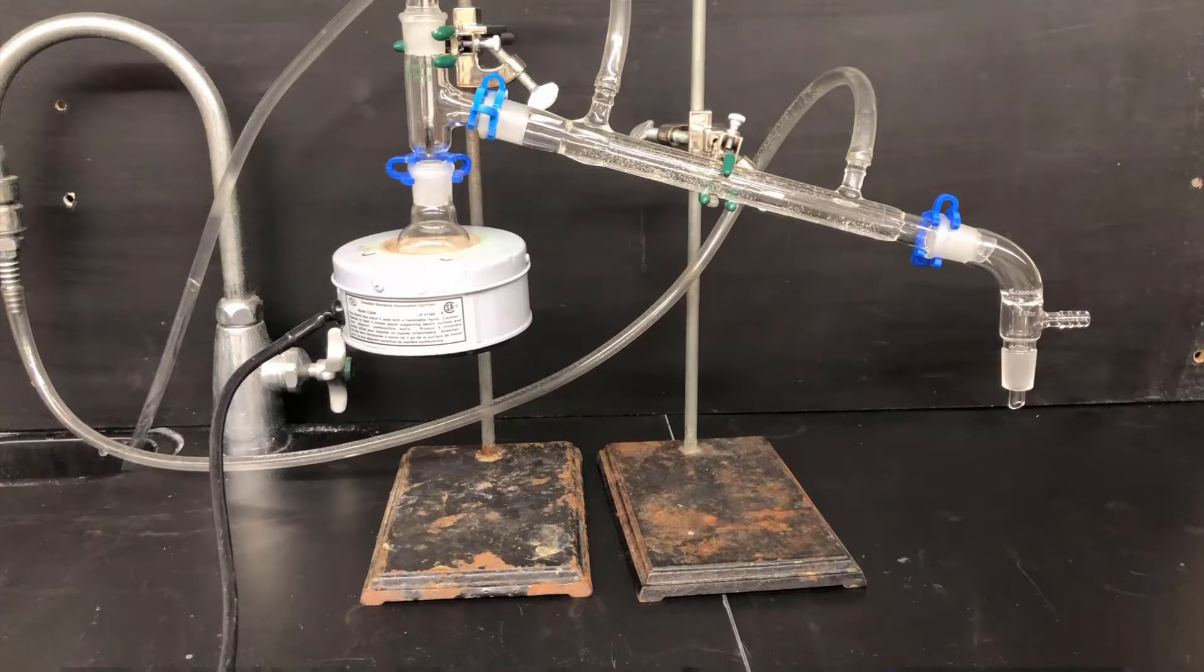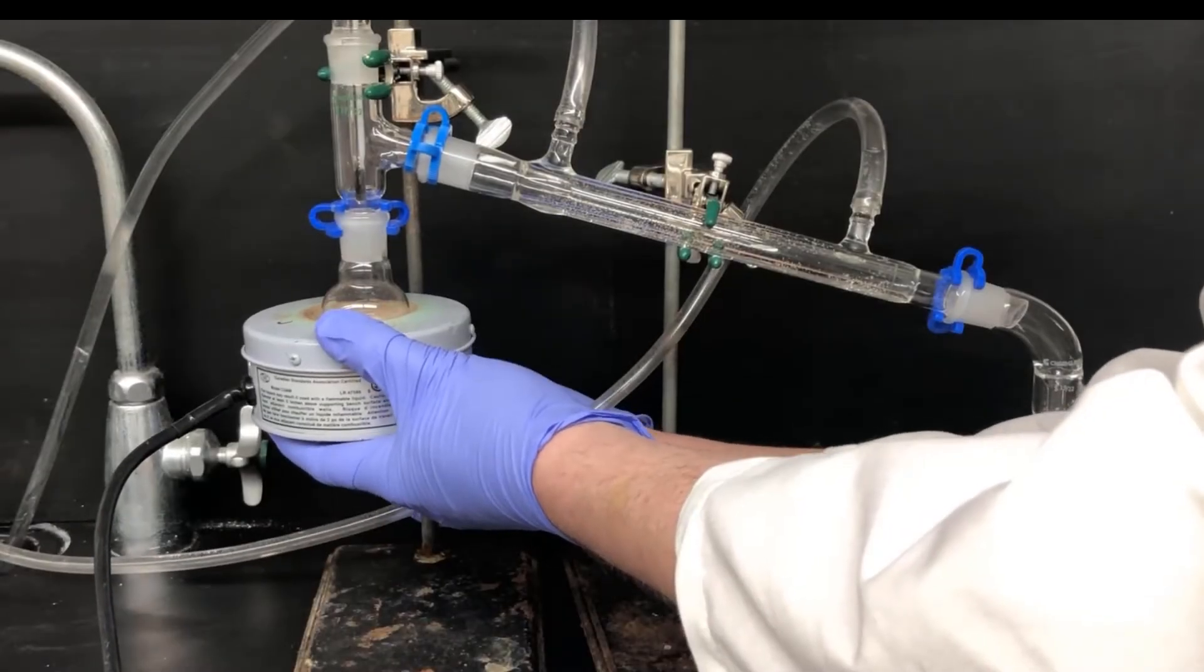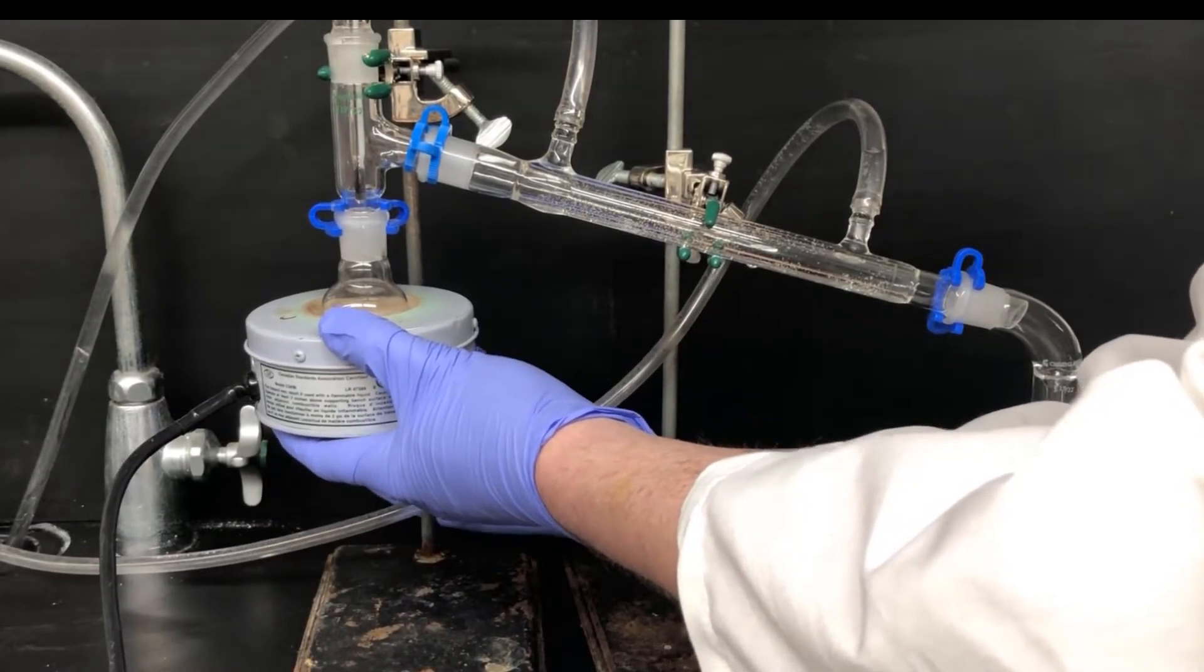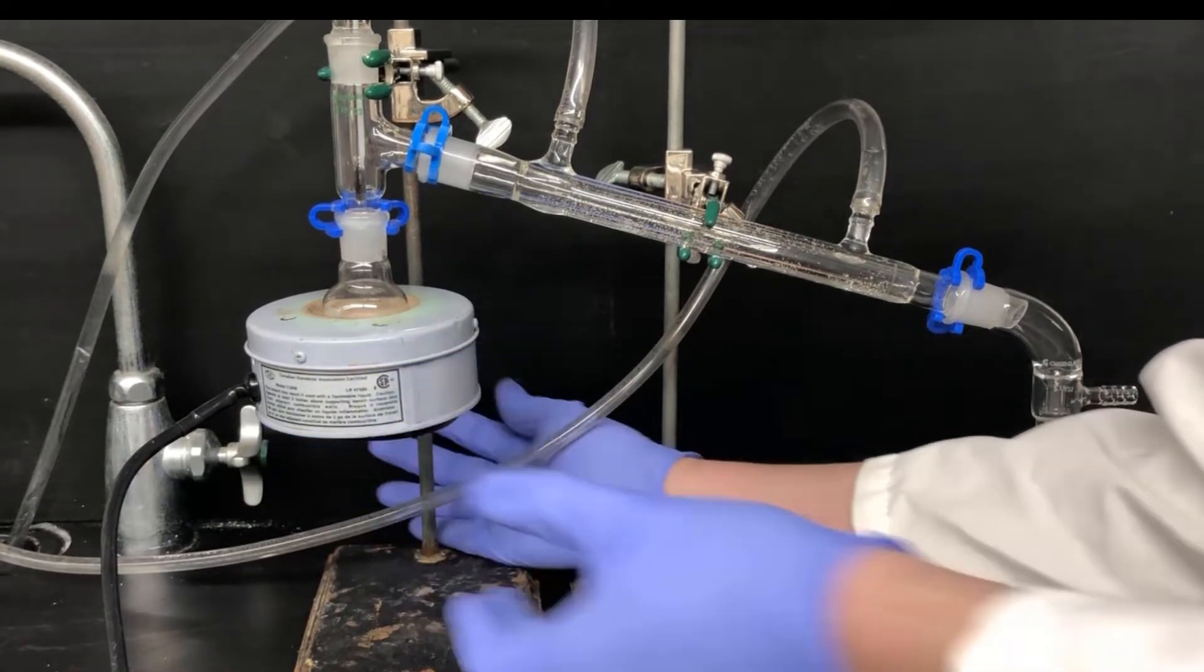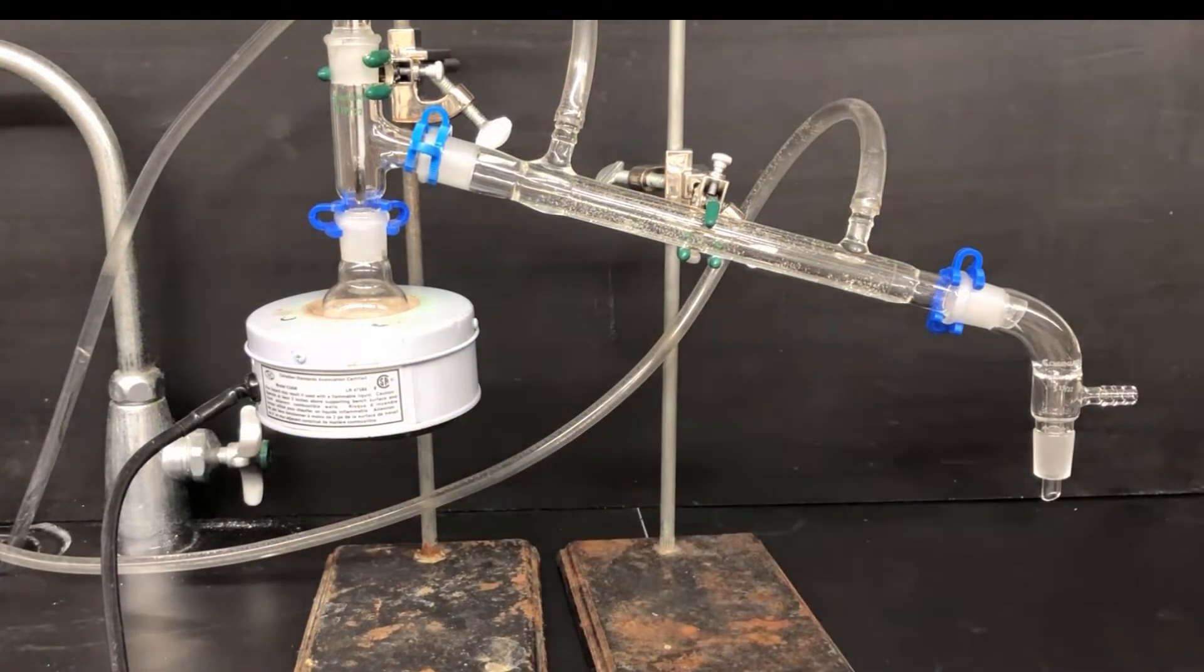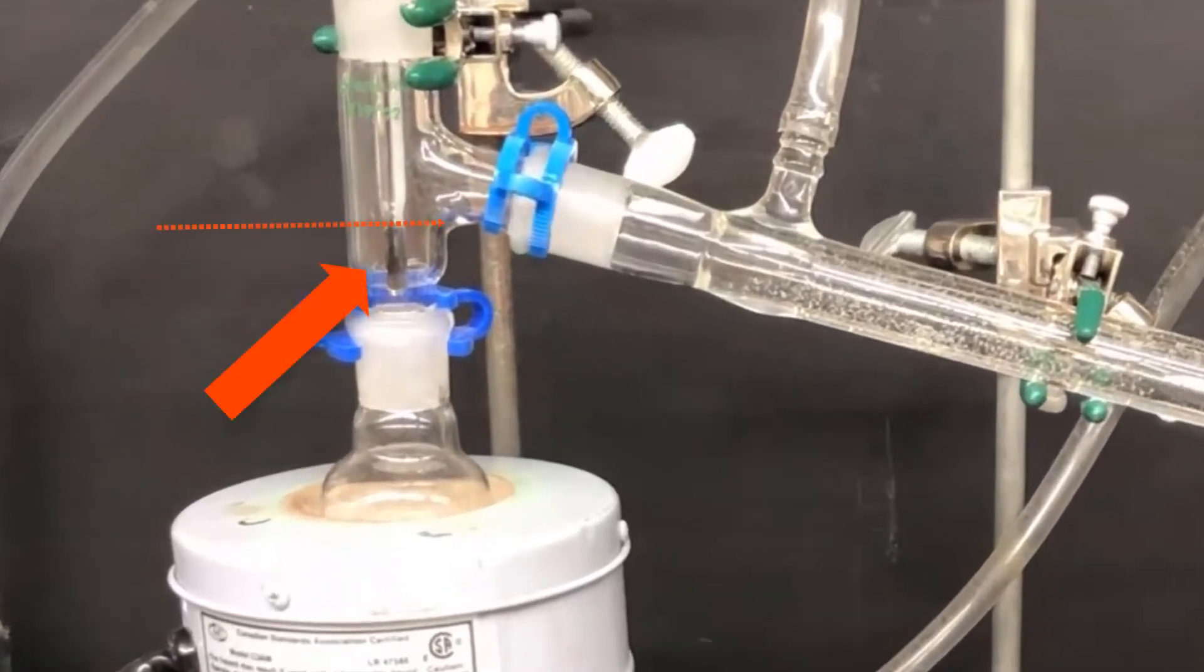Turn the condenser water on slowly at first. If you turn it on too fast, you run the risk of blowing the hoses off. Also, make sure that the condenser water is flowing in through the bottom port of the condenser and out through the top. Next, you'll want to make sure that the heating mantle is making good close contact with the bottom of the round-bottom flask. Make sure there's no air gap between it. Finally, make sure that the thermometer bulb is set to the right location. The thermometer bulb should be below the elbow of the distillation head.